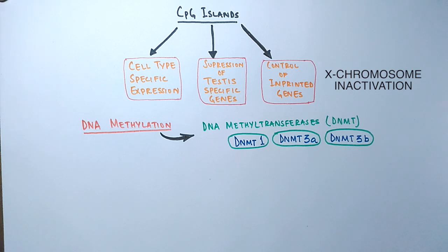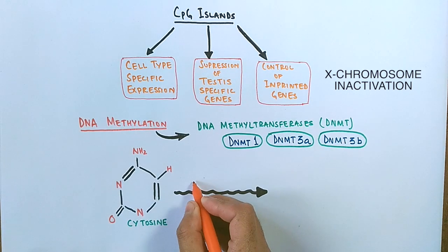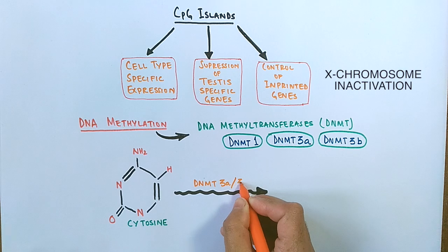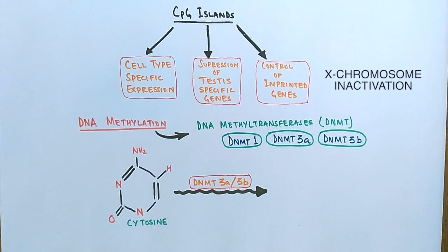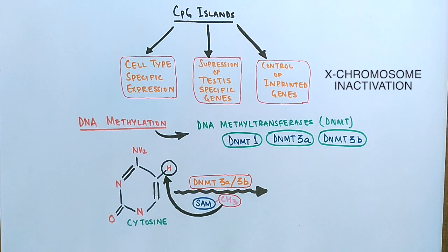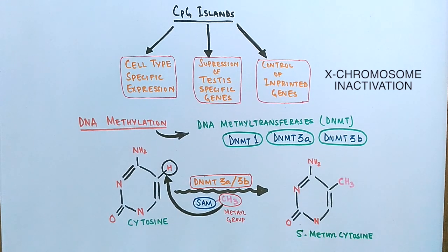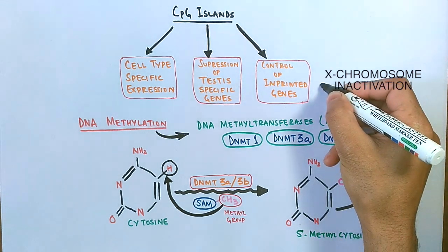Let's take a quick look at how cytosine is methylated. As shown in the figure, cytosine is acted upon by methyltransferases, particularly DNMT3A and DNMT3B. These enzymes help transport a methyl group from the SAM molecule to the cytosine at the 5th position, producing 5-methyl cytosine. It is these methylated bases in CpG elements that regulate gene expression through alteration or modification of gene expression.